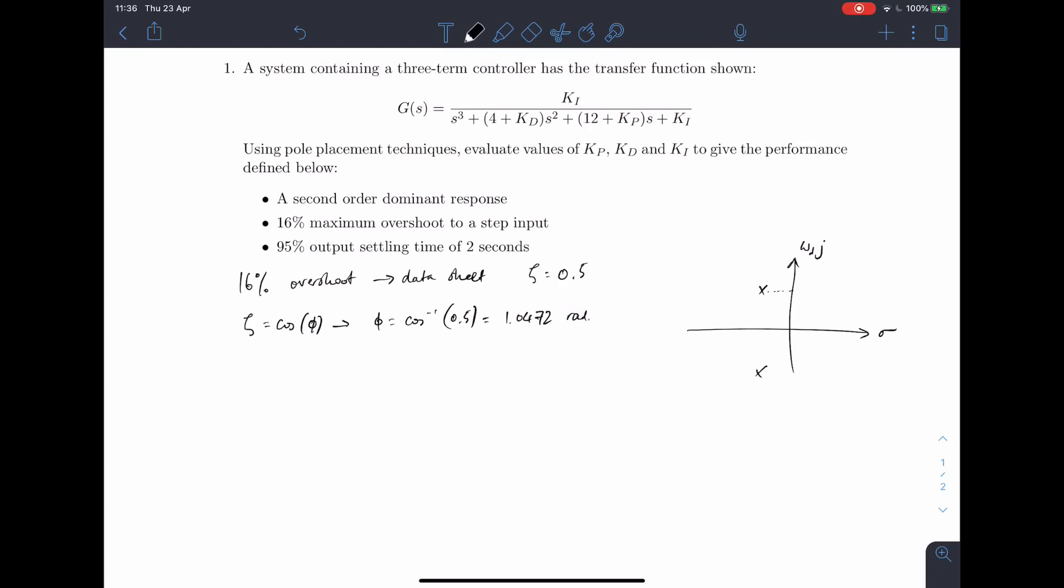And obviously we can work out this angle, this angle is phi. The settling time, we know it's going to be minus 3 divided by sigma as the rule of thumb that we use. That means that sigma must be minus 3 divided by 2 seconds. So that comes out to be minus 1.5. So on our graph, we know that this is minus 1.5.